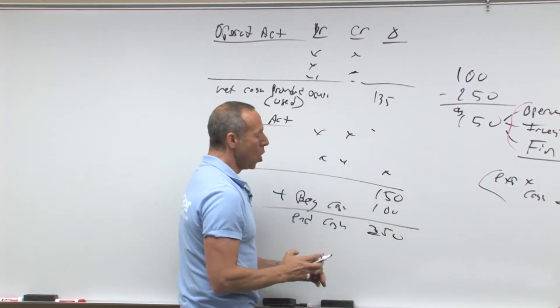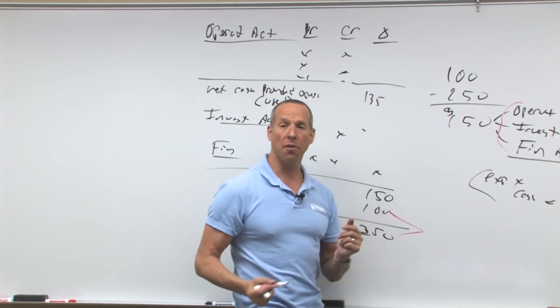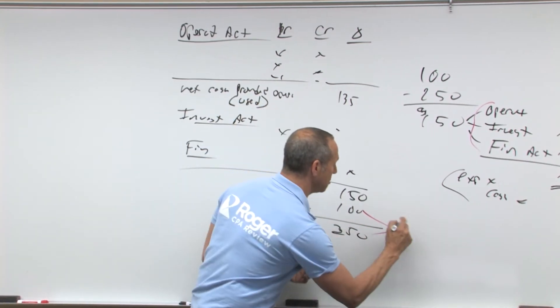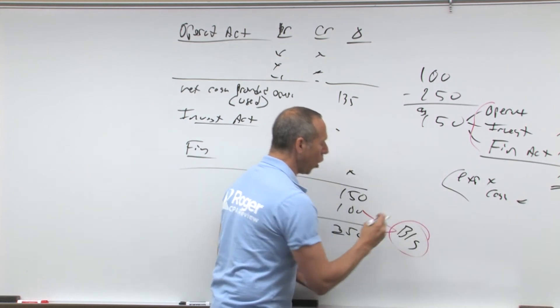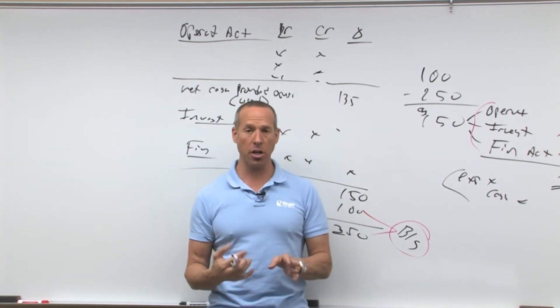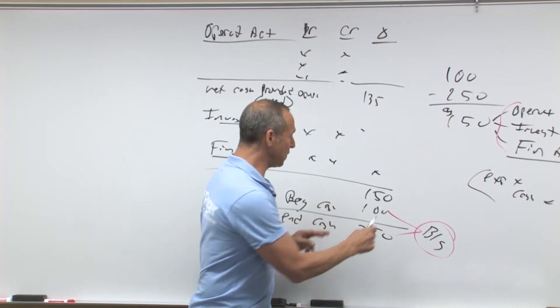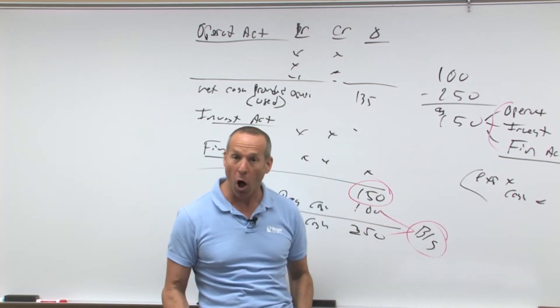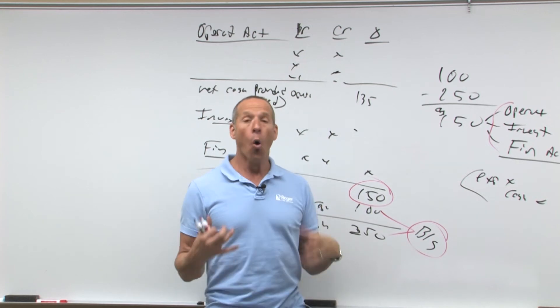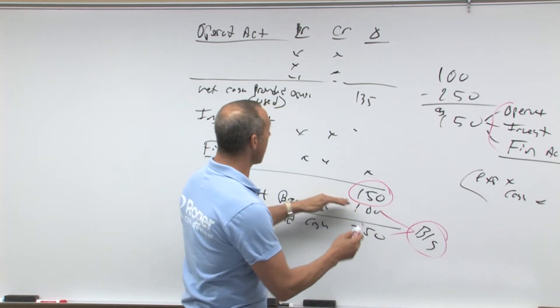Now, where do beginning and ending cash come from? What statements? They both come from the balance sheet. So really all we're doing is saying, I started the year with 100, I ended the year with 250. I have $150 more cash burning a hole in my pocket than I had at the beginning. Where did that cash come from?